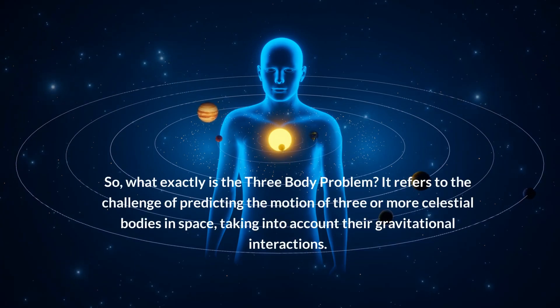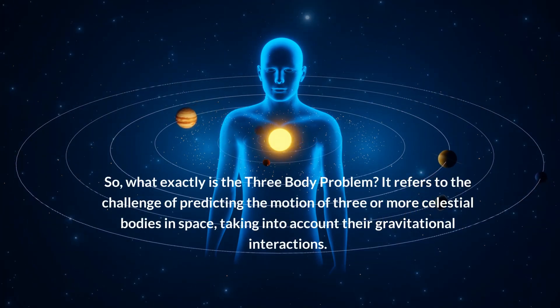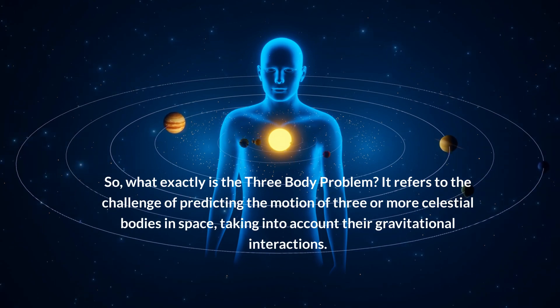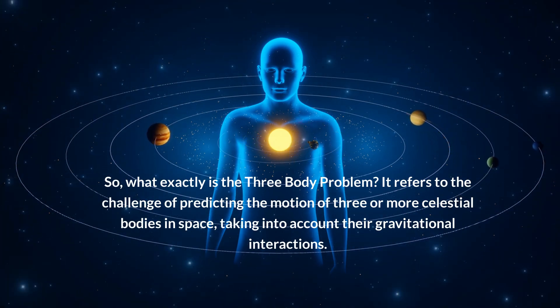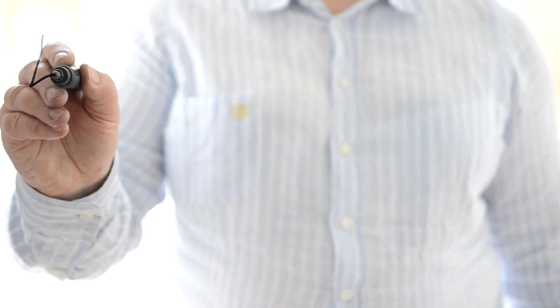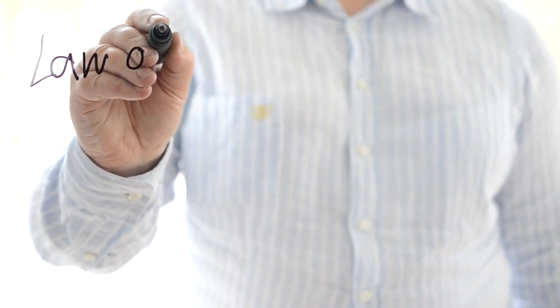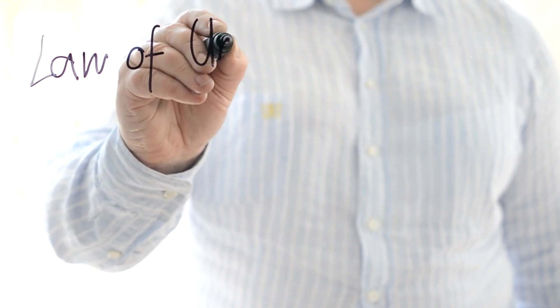So what exactly is the three-body problem? It refers to the challenge of predicting the motion of three or more celestial bodies in space, taking into account their gravitational interactions. This problem has its roots planted deeply in the 17th century, when Sir Isaac Newton formulated his laws of motion and universal gravitation.